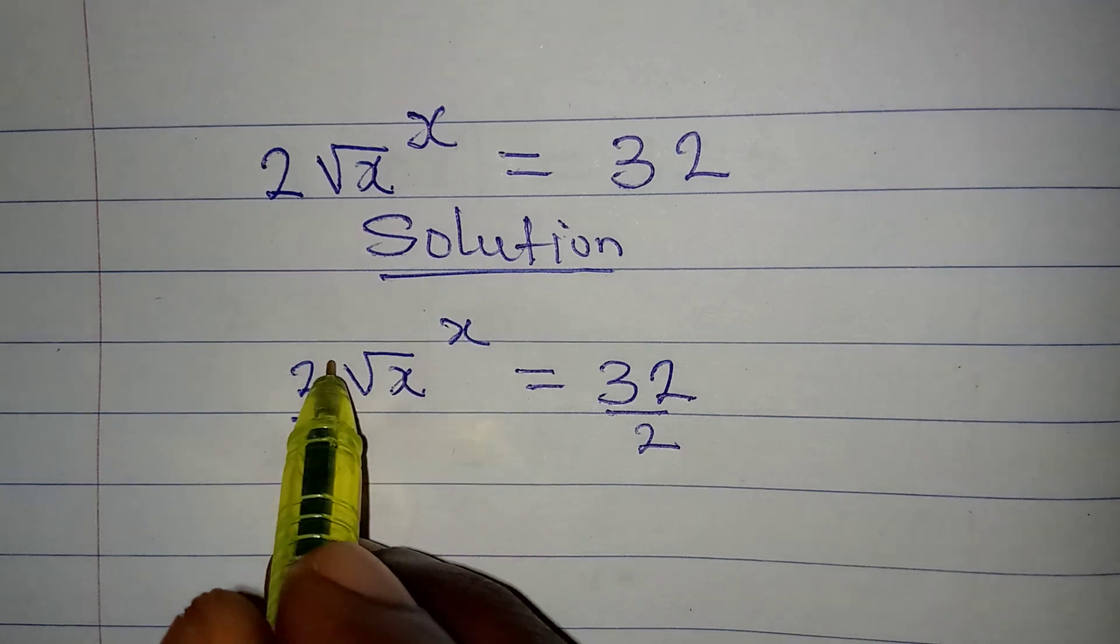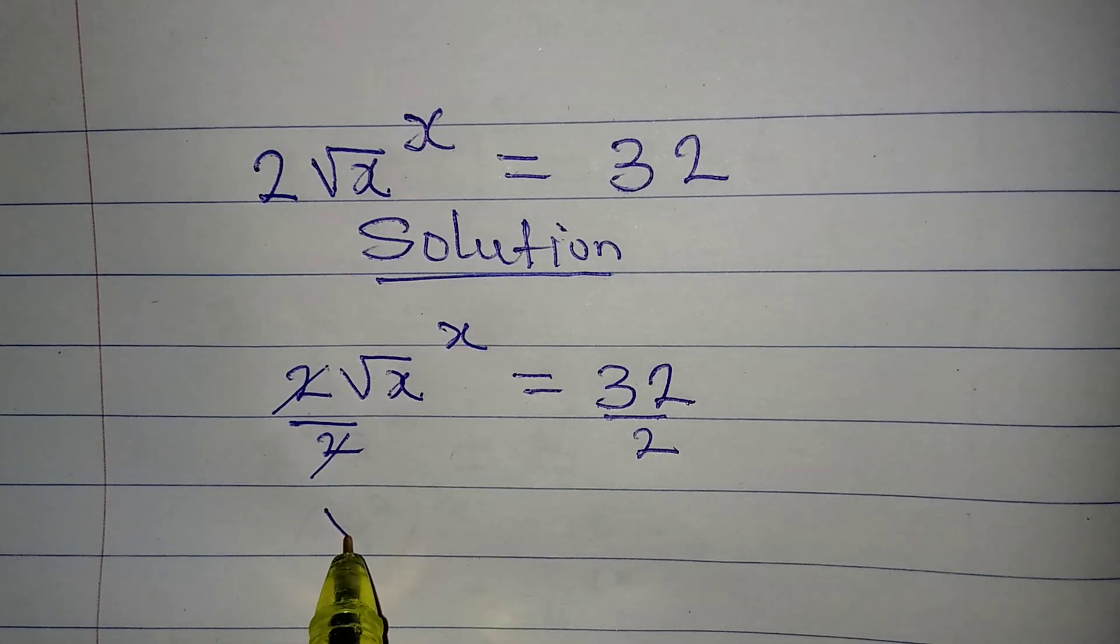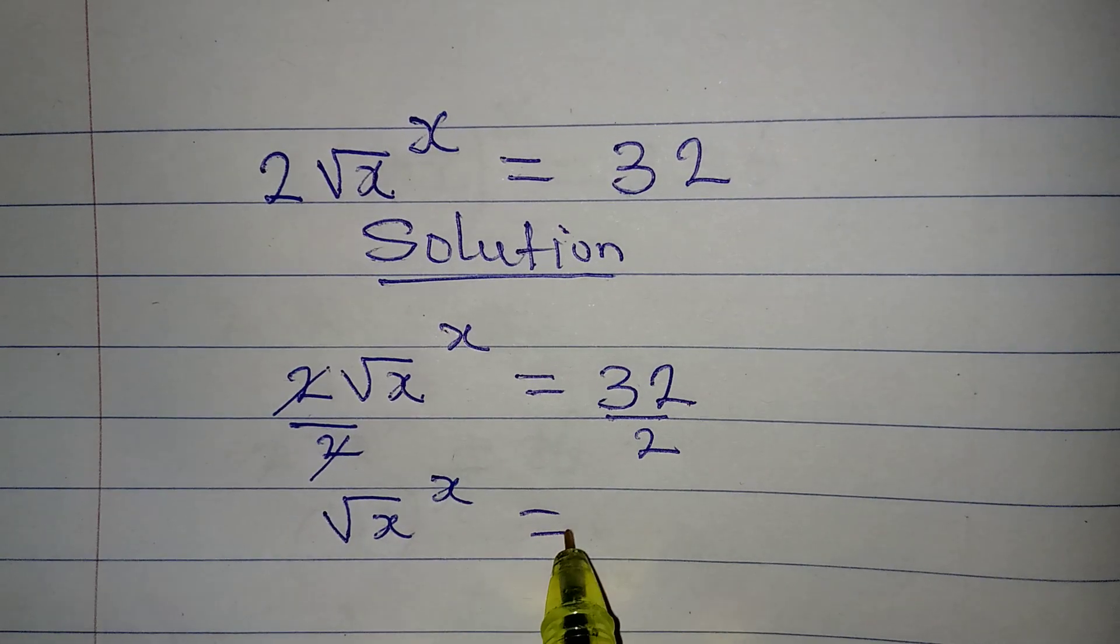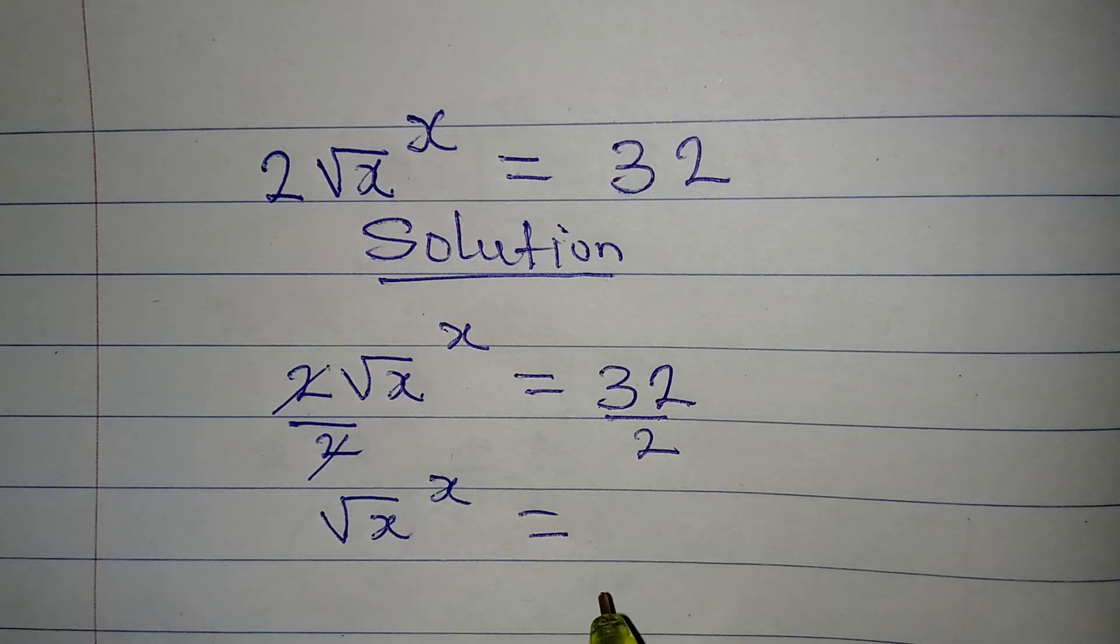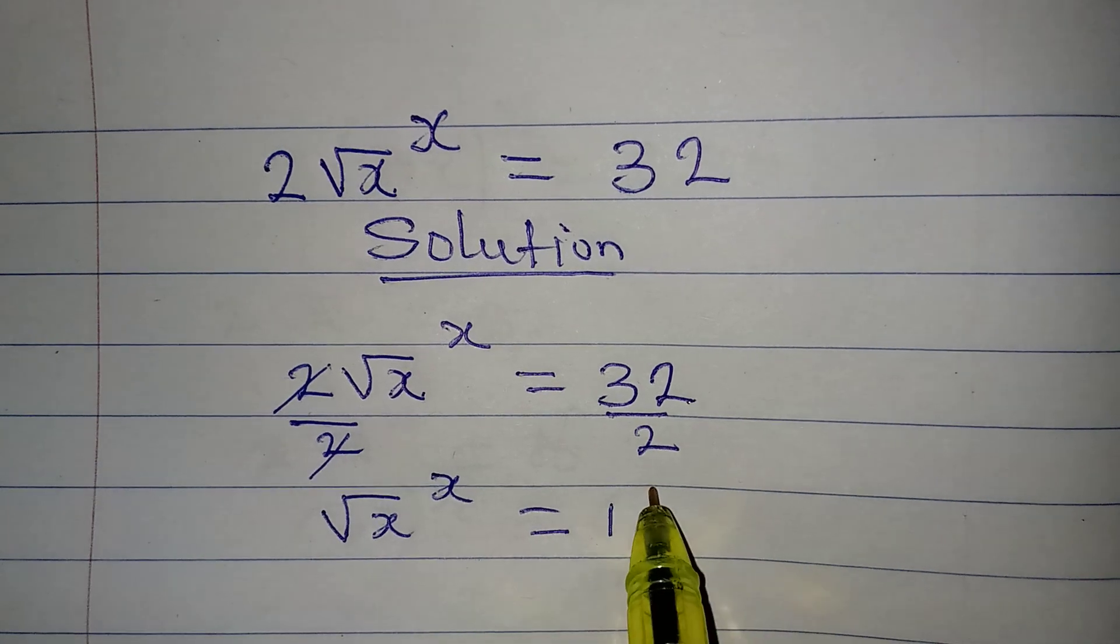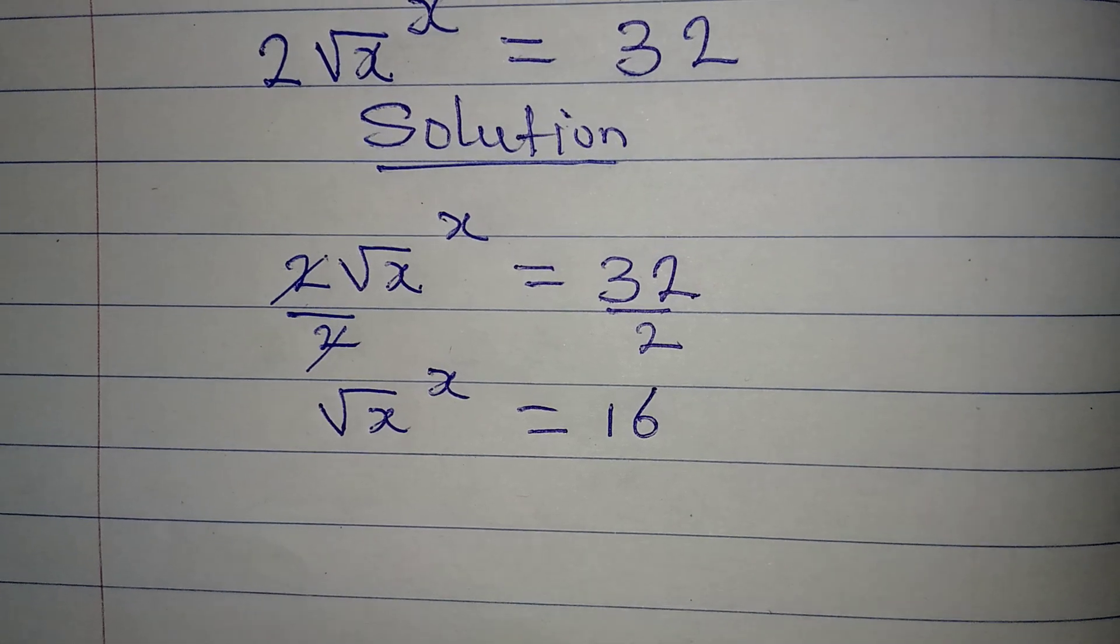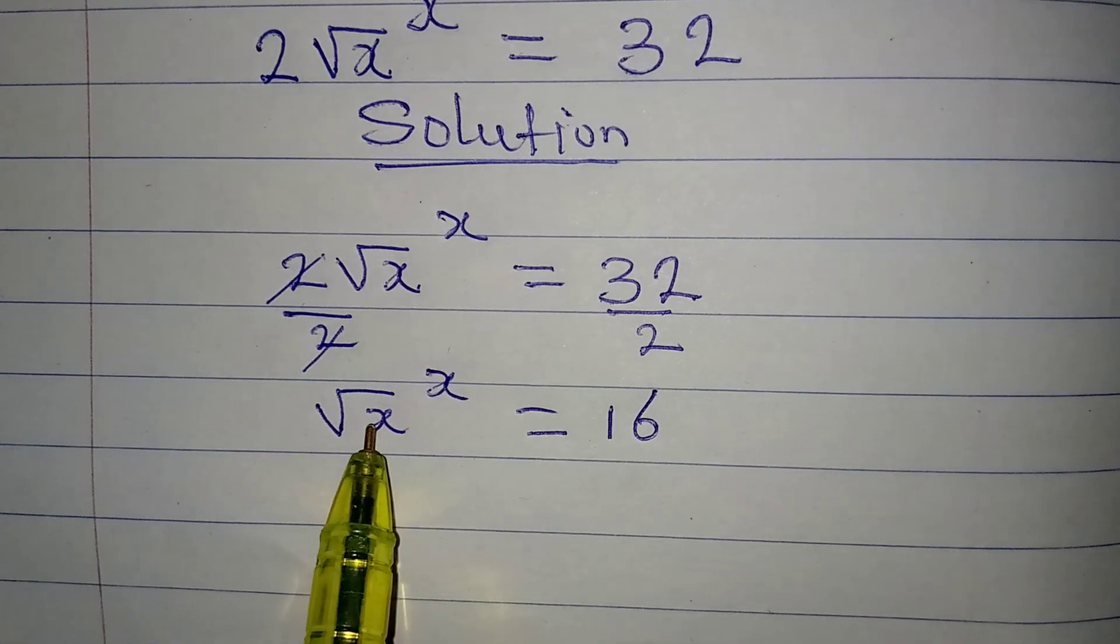This will cancel the 2, and then we'll have √x^x equal to 32 divided by 2, that will give us 16.